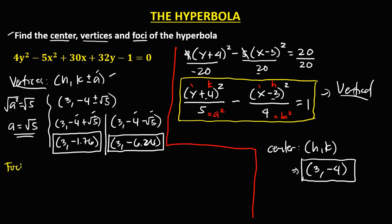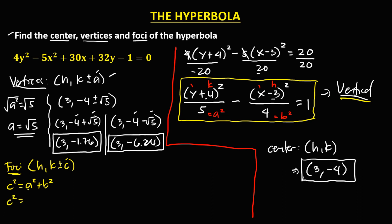To solve for the foci: since this hyperbola is vertical, the formula is (h, k plus or minus c). We need to solve for c first. For a hyperbola, c squared equals a squared plus b squared. So c squared equals 5 plus 4, which is 9. Taking the square root, c equals 3.